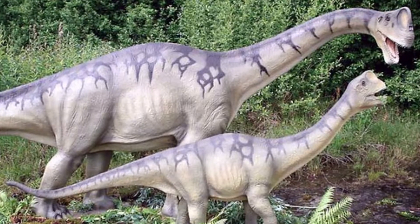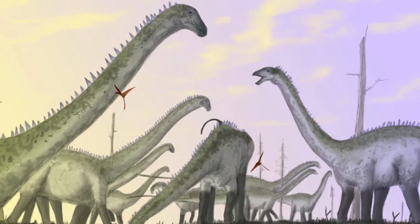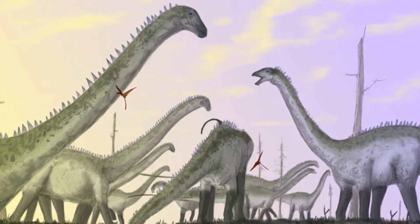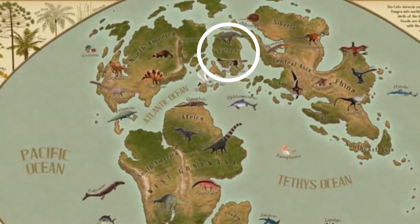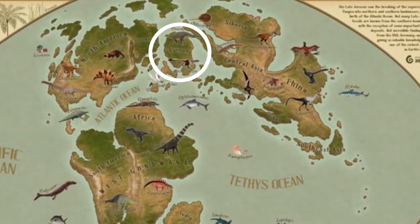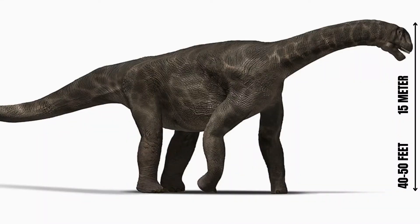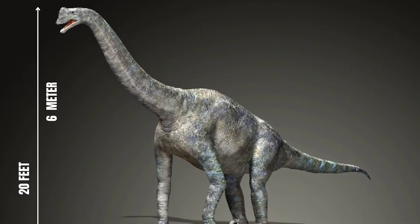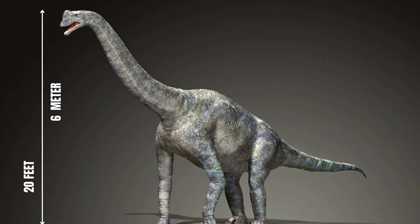So, why was Europosaurus so small? It is certain that Europosaurus evolved from larger sauropod ancestors. These giant sauropods roamed mainland Europe during the middle to late Jurassic period. While the average sauropod was 40 to 50 feet — 15 meters long — Europosaurus was only 20 feet, or 6 meters long.